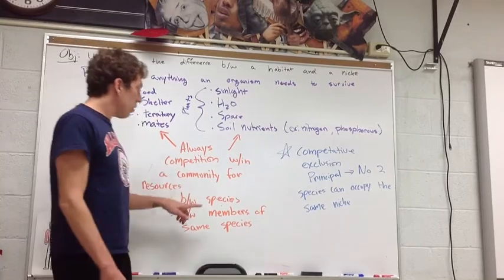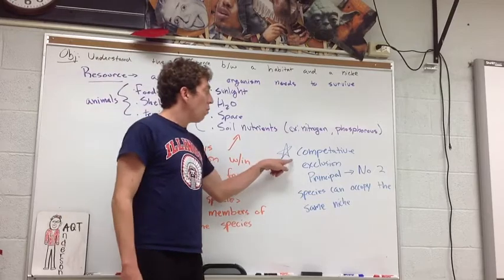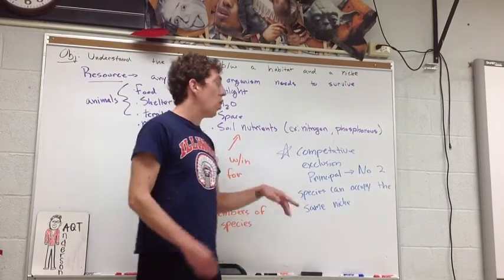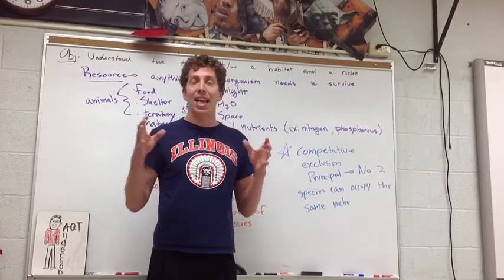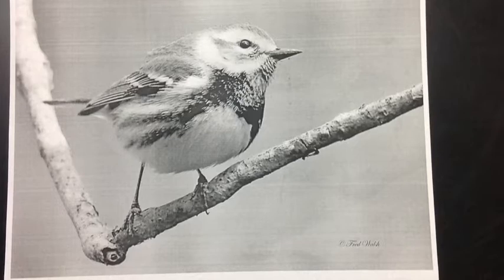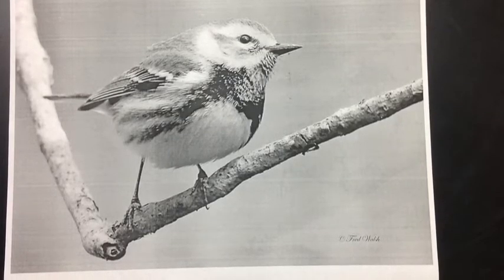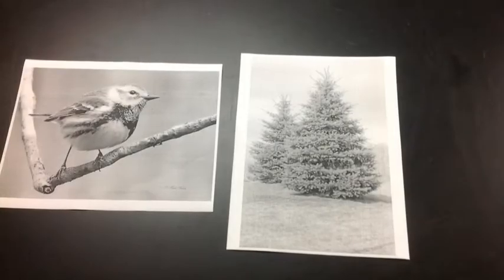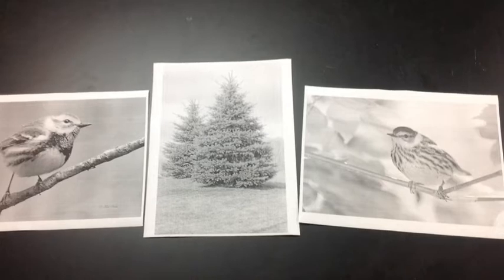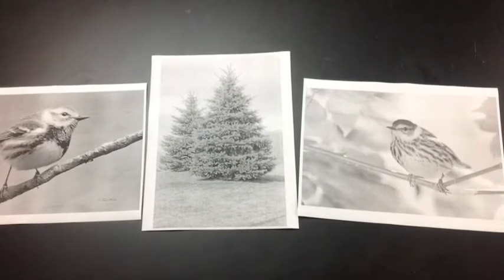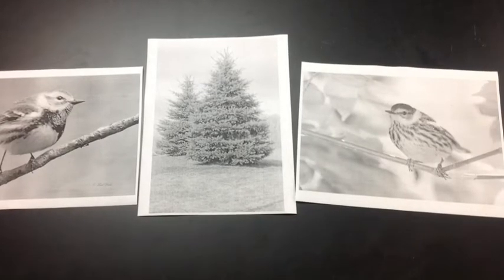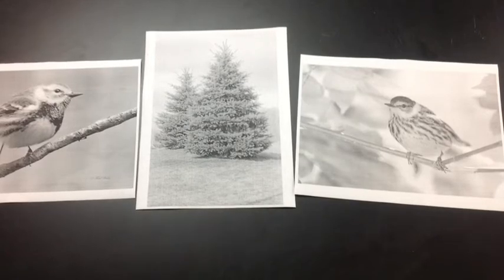When we talk about competition between species, we discuss the competitive exclusion principle, which says that no two species can occupy the exact same niche — someone's got to do it a little differently. For example, the black-throated green warbler and the Cape May warbler both want to live in the same tree. Since they can't occupy the exact same niche, they undergo resource partitioning — one bird lives in one part of the tree while another lives in a separate part — so they both have habitat and shelter without occupying the same niche.